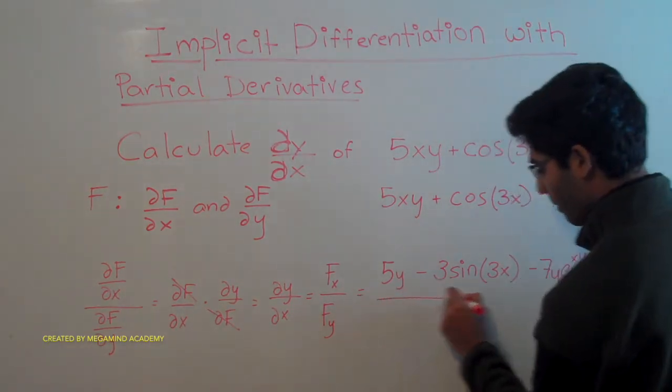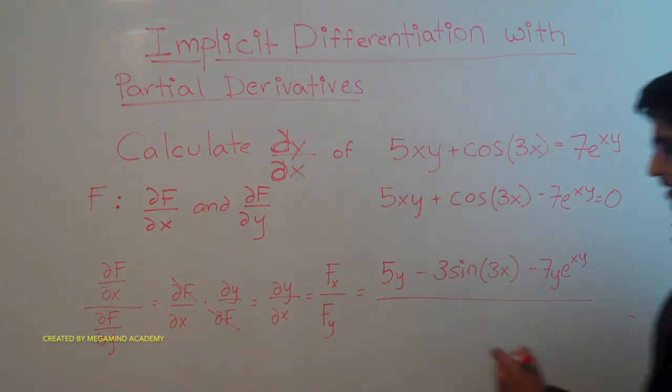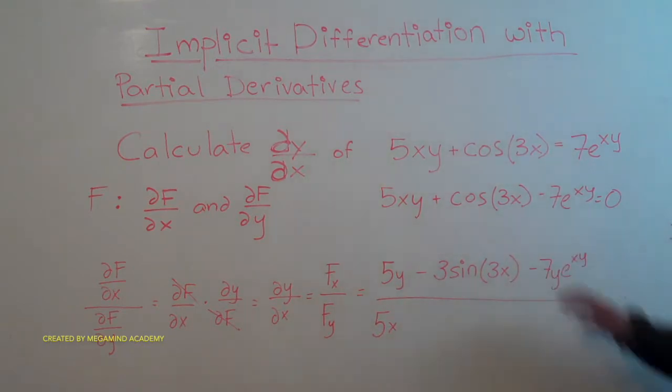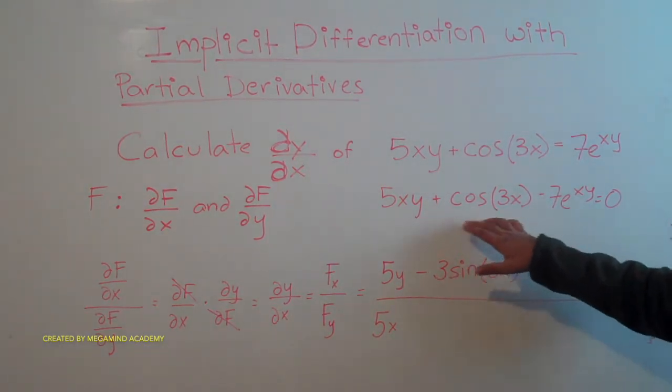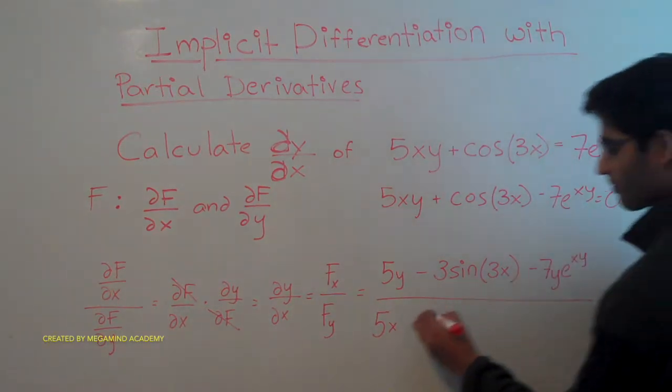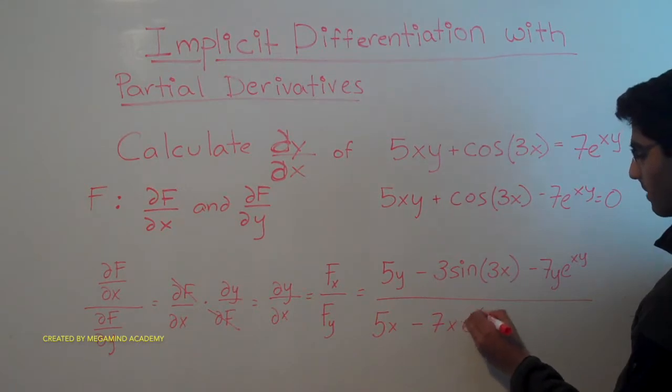Now we have to put this over the derivative of f with respect to y, which should be 5x. Then here, there are no terms comprised of y in this term, which means it's plus 0, minus 7x times e to the xy power.